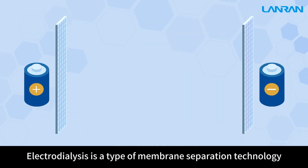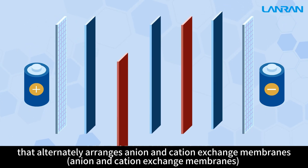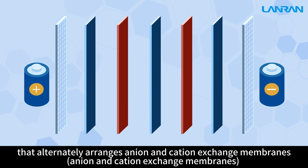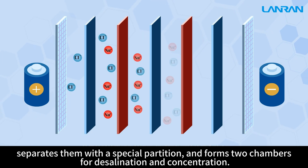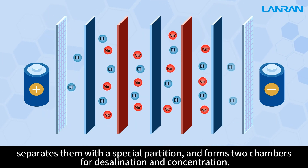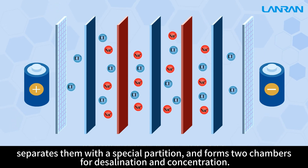Electrodialysis is a type of membrane separation technology that alternately arranges anion and cation exchange membranes between positive and negative electrodes, separates them with a special partition, and forms two chambers for desalination and concentration.